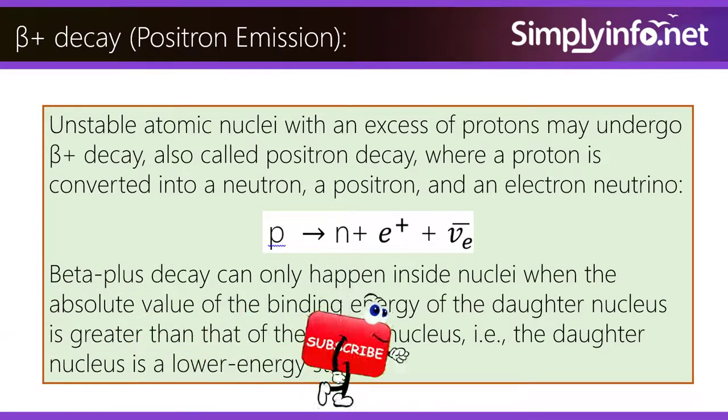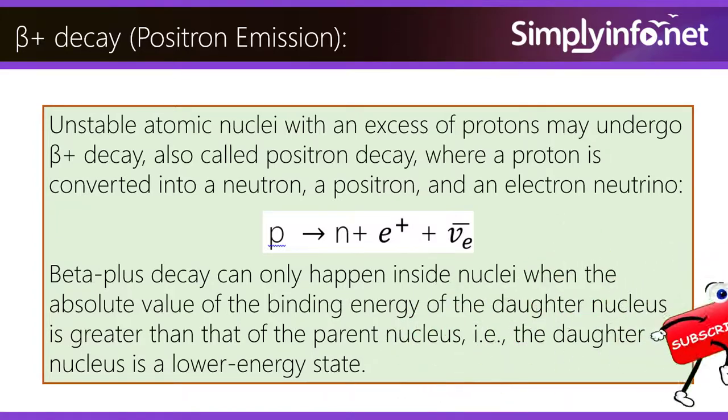Beta positive decay, positron emission. Unstable atomic nuclei with an excess of protons may undergo beta positive decay, also called positron decay, where a proton is converted into a neutron, a positron, and an electron neutrino. Beta plus decay can only happen inside nuclei when the absolute value of the binding energy of the daughter nucleus is greater than that of the parent nucleus. That is, the daughter nucleus is a lower energy state.